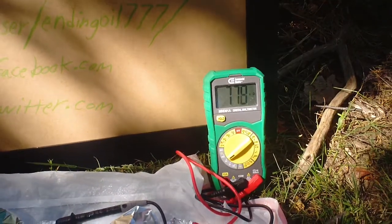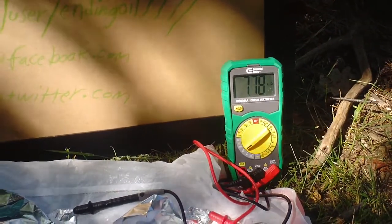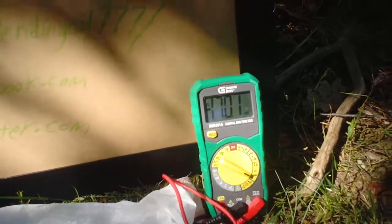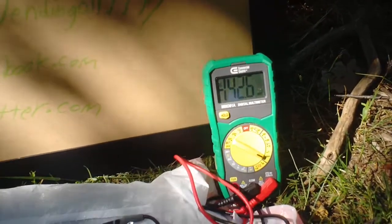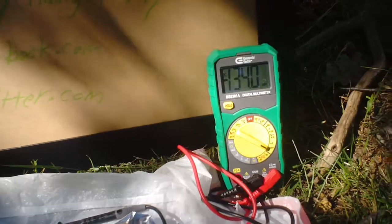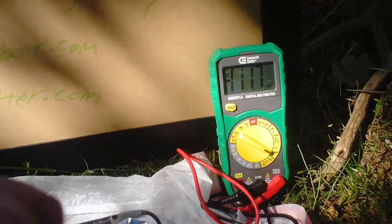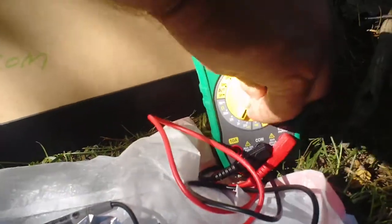The multimeter here is currently reading resistance. Now it's set to voltage. This is the voltage in the cell. Voltage on the multimeter. Resistance.